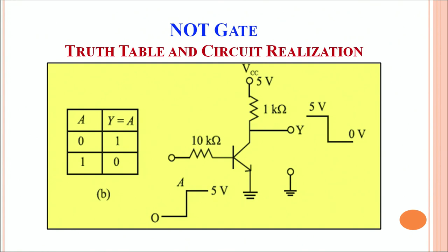To realize a NOT gate we make use of a transistor. This is a normal NPN transistor and we have used it in a common base configuration. The input is provided at terminal A and the output is measured across terminal Y.